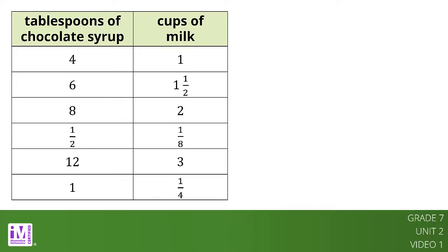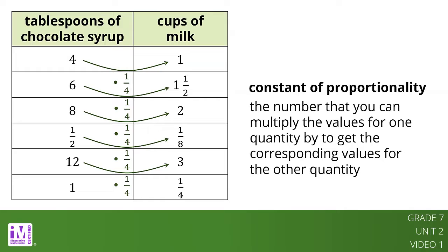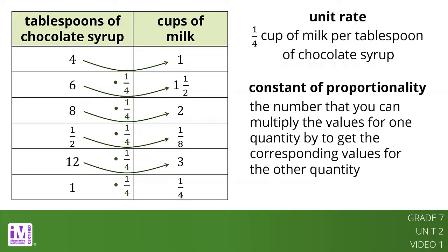In a proportional relationship, the values for one quantity are each multiplied by the same number to get the values for the other quantity. This number is called the constant of proportionality. In the table here, we can multiply any value in the chocolate syrup column by one-fourth to get the corresponding value in the milk column. We would call one-fourth the unit rate because it takes one-fourth of a cup of milk for each one tablespoon of chocolate syrup. We also say that one-fourth is the constant of proportionality for this relationship.